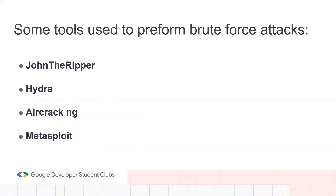We're going to see some tools you can use to perform a brute force attack. All of these are pre-installed on Kali Linux so you don't need to install them. The first one is John the Ripper, then we've got Hydra — this is the one we're going to be demonstrating — and we also have Aircrack-ng and Metasploit.